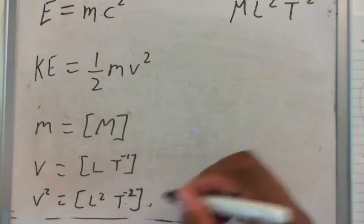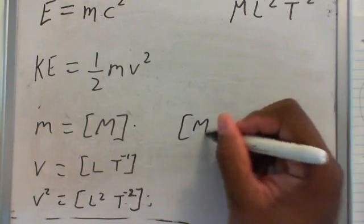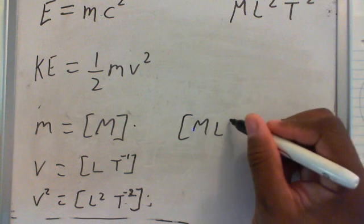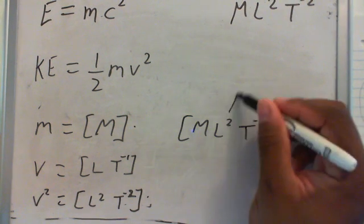If you multiply these two together, if you multiply this and this, you will get M times L squared over T squared, which is exactly what we found here.